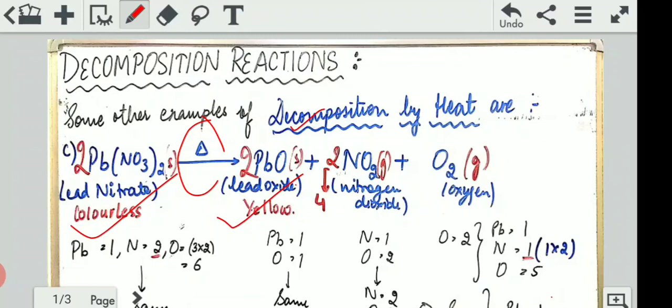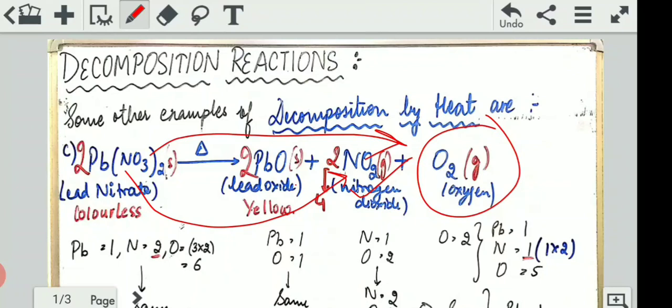So one compound broke. Now second, one nitrogen comes out. One nitrogen went here and one oxygen reached here. Then what compound formed? NO2. Along with one more gas released, which we called oxygen. So oxygen became part of all three compounds. Lead also combined with oxygen, nitrogen also combined with oxygen, and separately also oxygen came out.